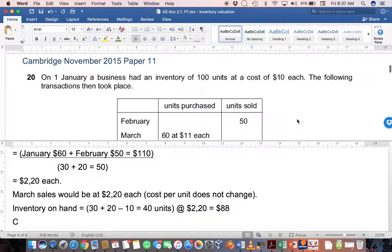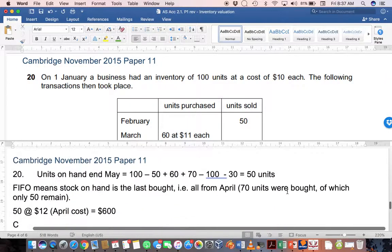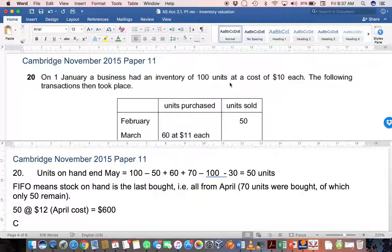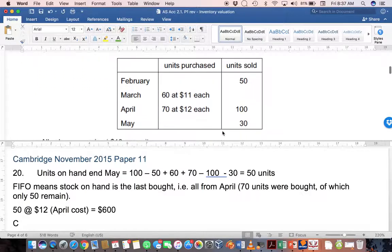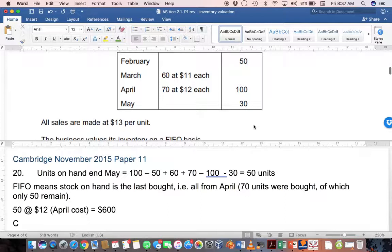Let's look now at Cambridge November 2015 paper 11. On 1st January a business had inventory of 100 units at $10 each. This is your opening stock valued at $1,000. The following transactions then took place. In February you sold 50 units, so you would only have 50 units of $10 each left over. In March you bought 60 units at $11 each. In April you bought 70 units at $12 each and sold 100 units. And in May you sold 30 units.